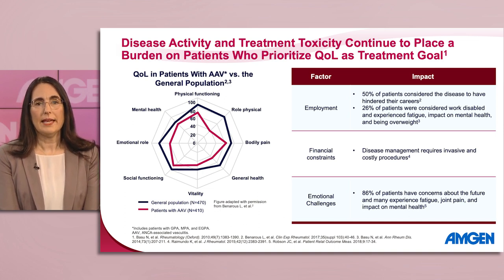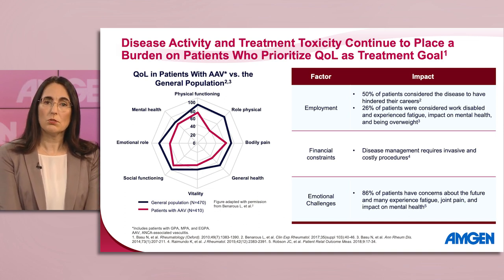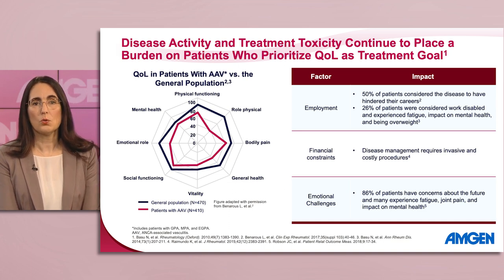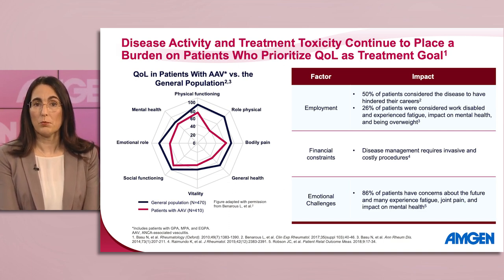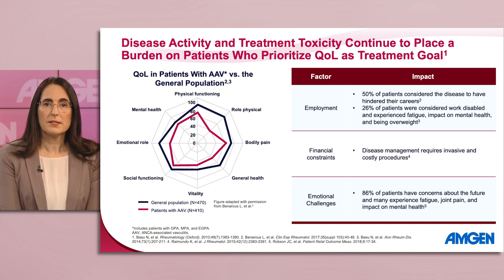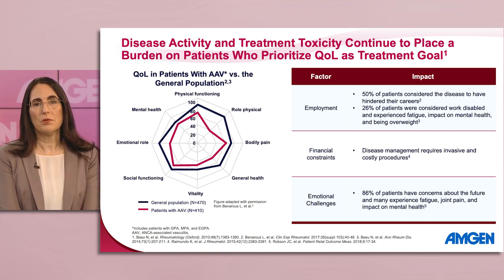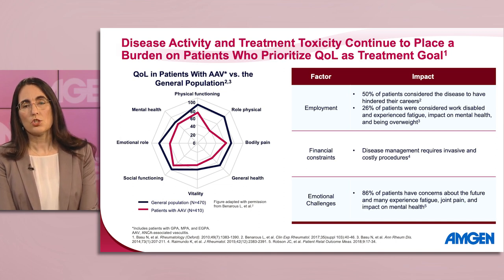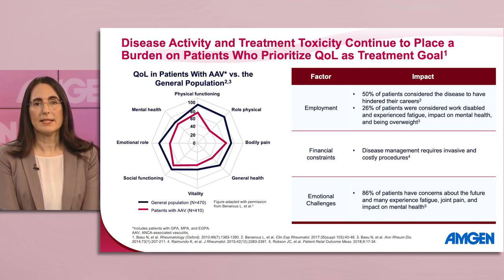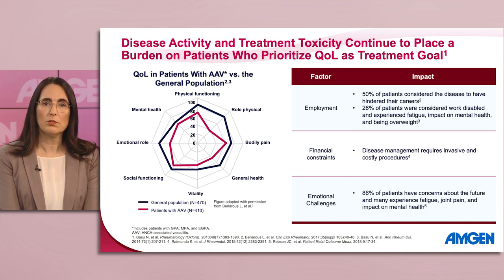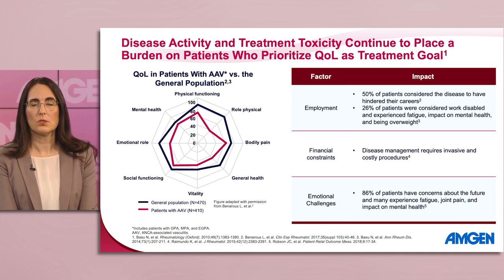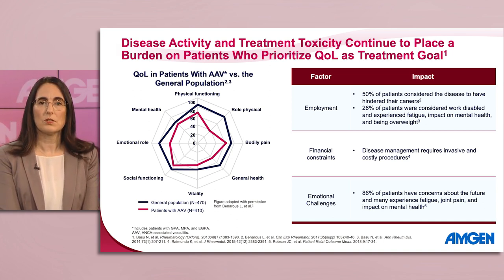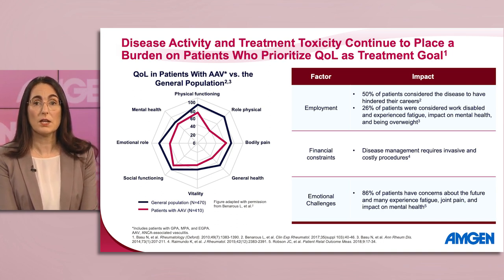Data from a cross-sectional study conducted at a National Referral Center in Cochin Hospital in Paris, France, showed a reduction in quality of life as measured by the SF-36 between the general population and patients with ANCA-associated vasculitis. Moreover, the reduction in quality of life seen in patients with ANCA-associated vasculitis was comparable to that seen in other chronic diseases.